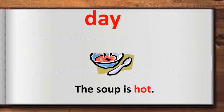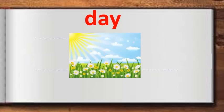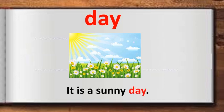The next word is 'day.' Repeat after me. What does 'day' mean? Day is the opposite of night, or it refers to a period of 24 hours. I have used the word 'day' in a sentence: 'it is a sunny day.' Look at the image — you can see sun rays, a blue clear sky, and white clouds floating. It is a sunny day.